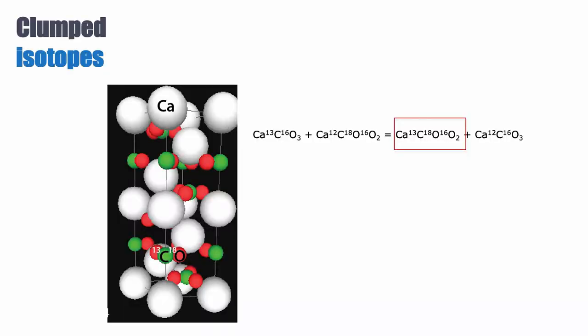But also, due to thermodynamics, this species of the heavy, heavy substitution, that's what we call the clumped isotope, where the heavy C13 and the heavy O18 are clumped together, this only forms at lower temperature. So this is an indication of the temperature of formation, and this is not dependent on the fluid composition. It's only dependent on the composition of the solid phase, not at all the water, and so it's extremely valuable.